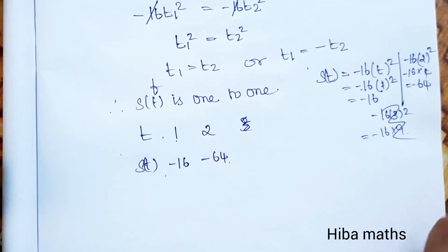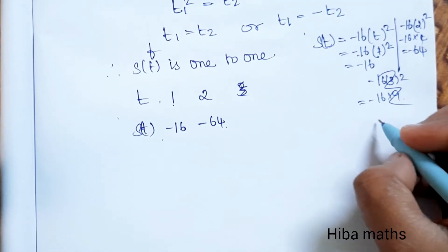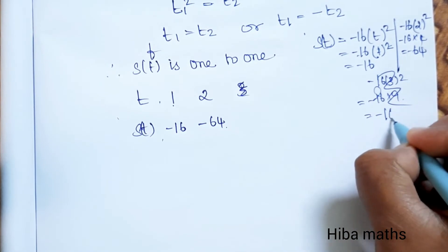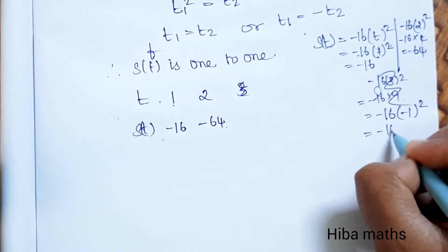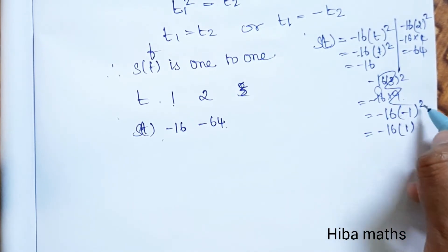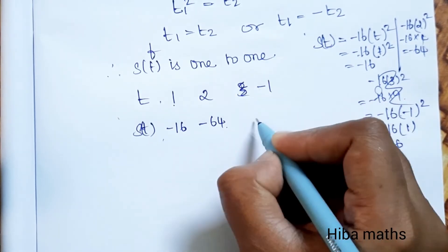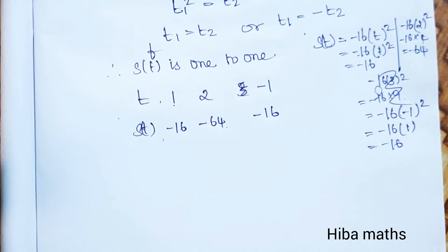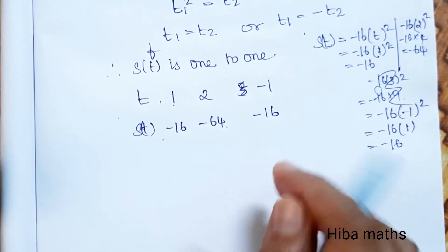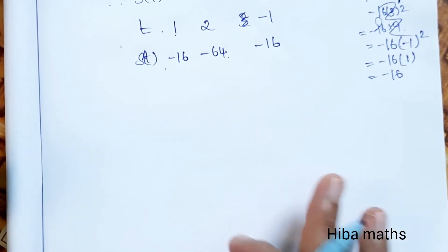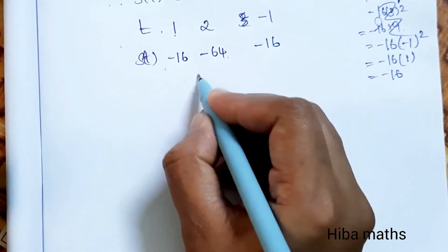Also checking negative time: for t = -1, s(-1) = -16(1)² = -16. Now let's plot these three values on the graph.